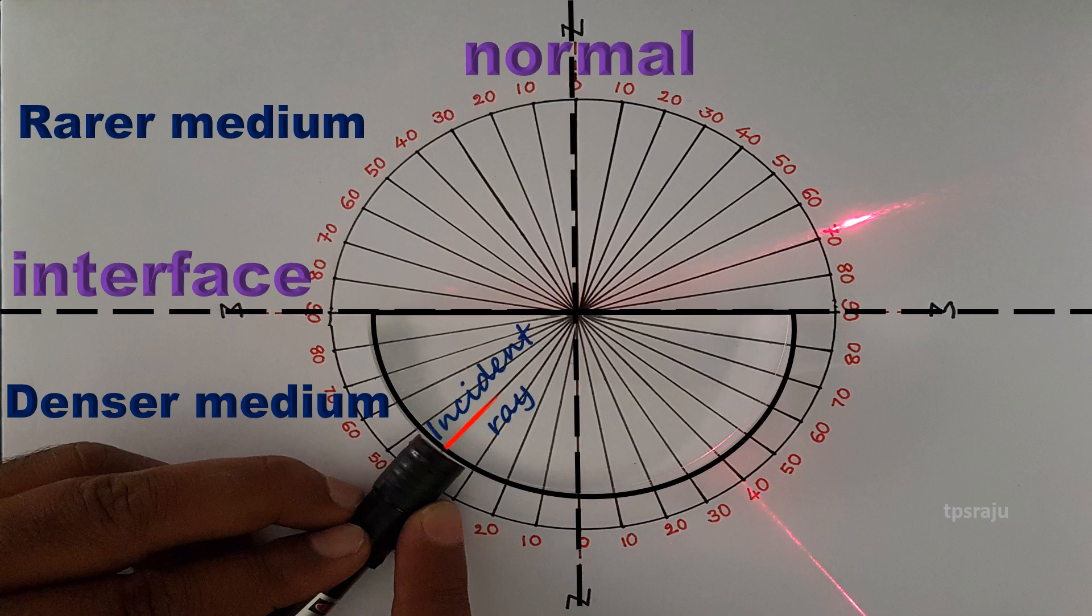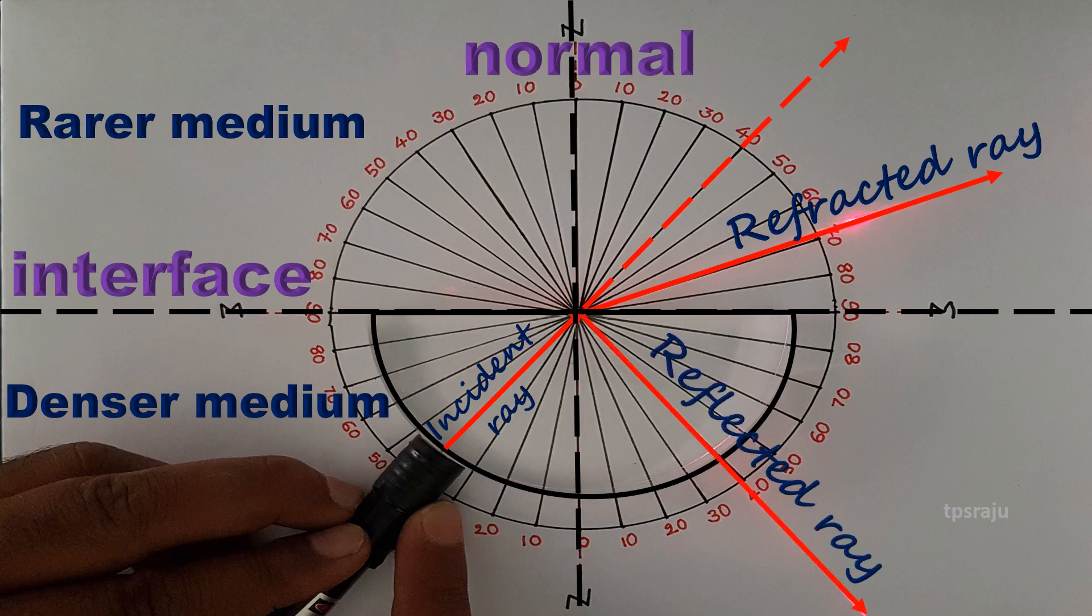When we send laser light through glass disc it bends away from the normal, because it travels from denser to rarer medium. At the same time some part of light reflected into the glass disc. Here there are three angles: angle of incidence, angle of refraction and angle of reflection.